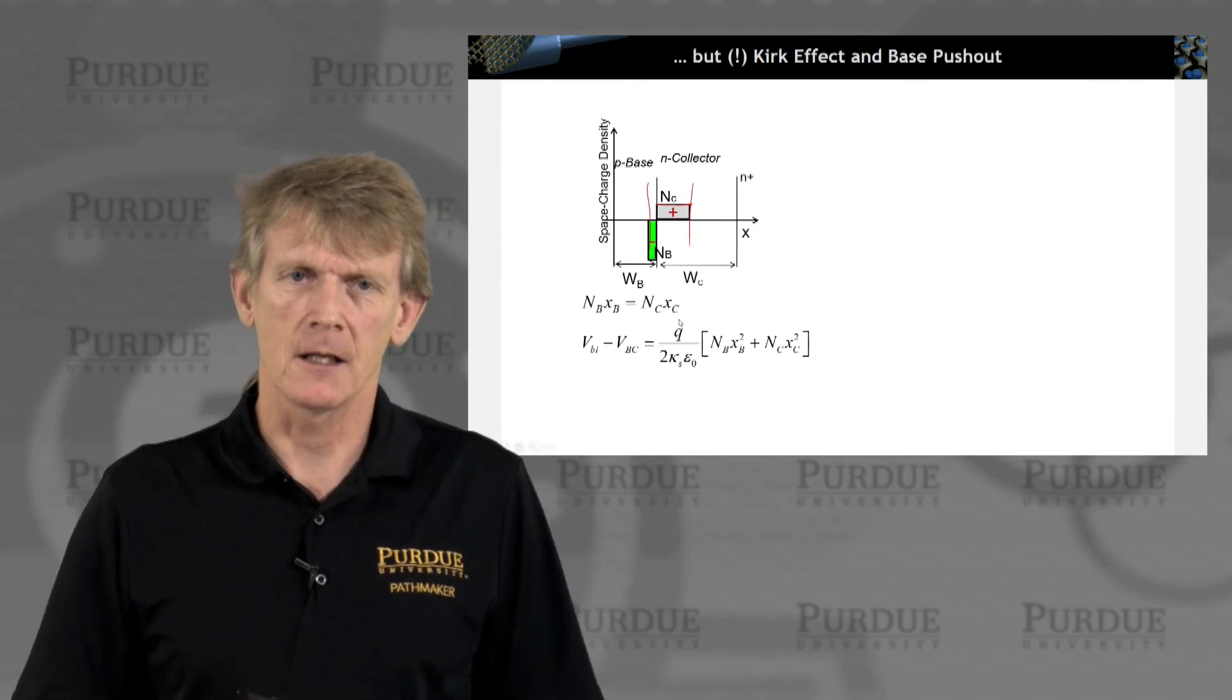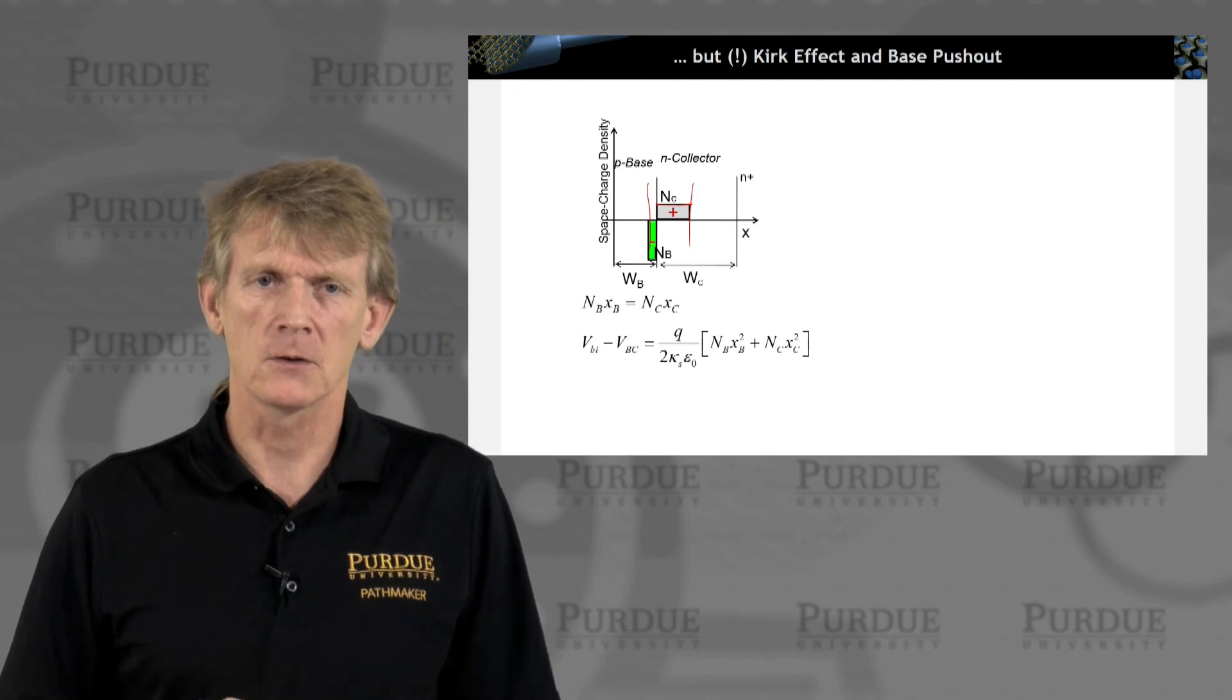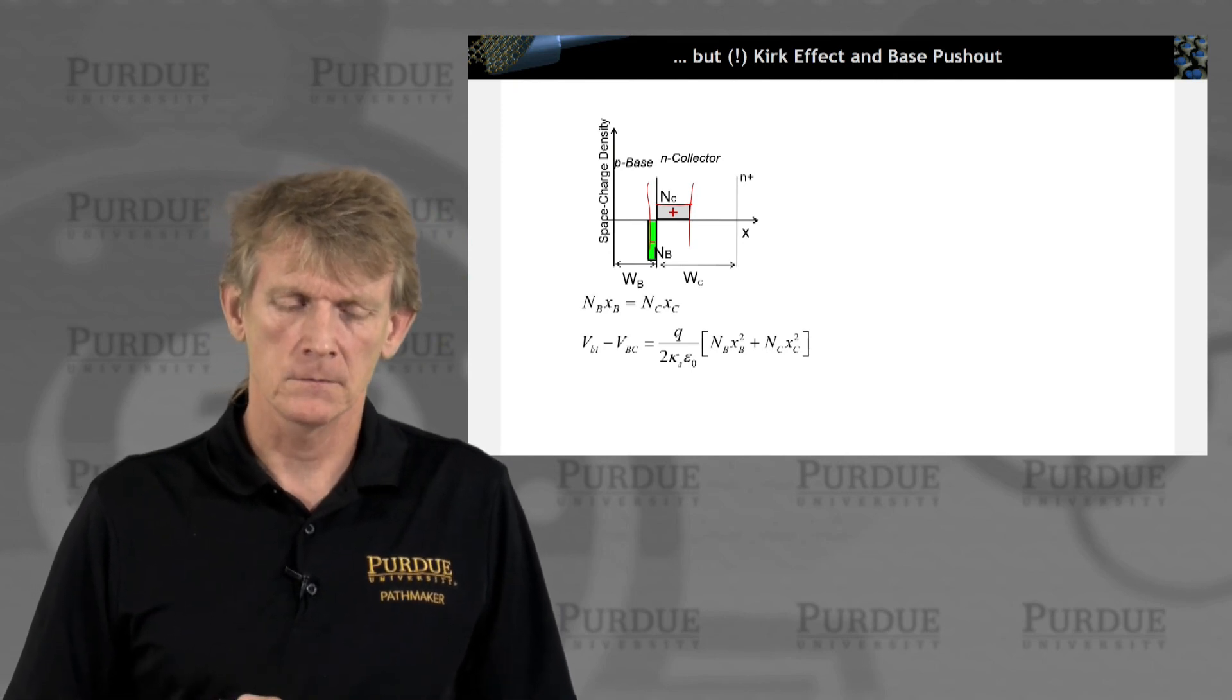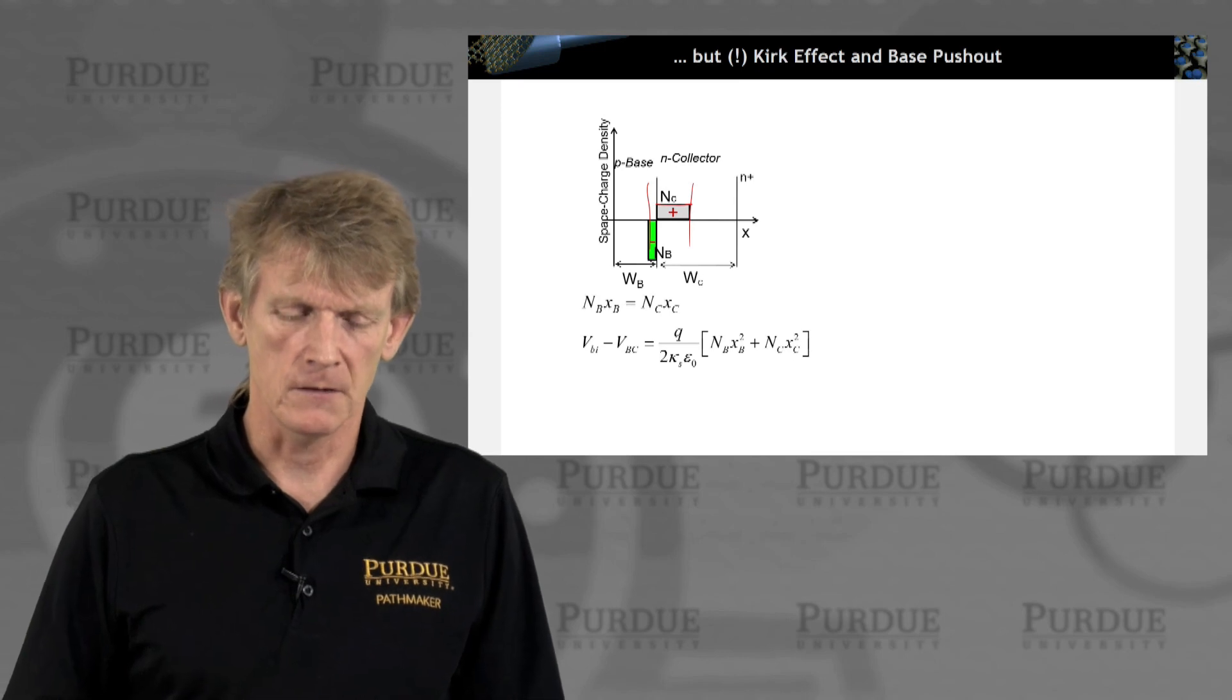Remember you have a sheet charge right here. You make this distance larger, your junction capacitance goes down, which is what we just said we would like to achieve.